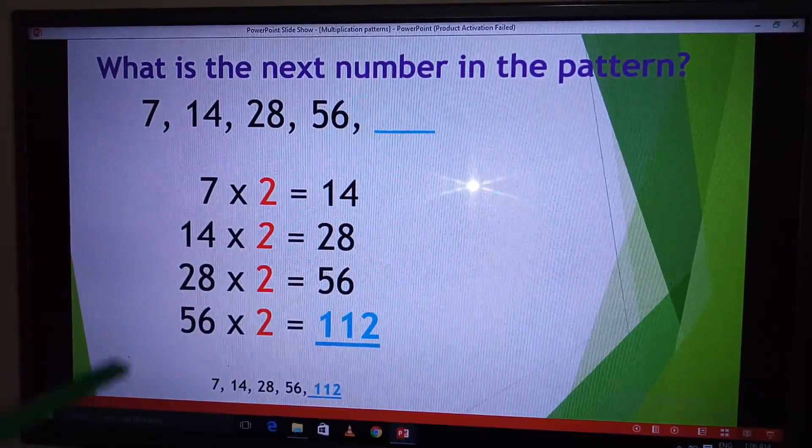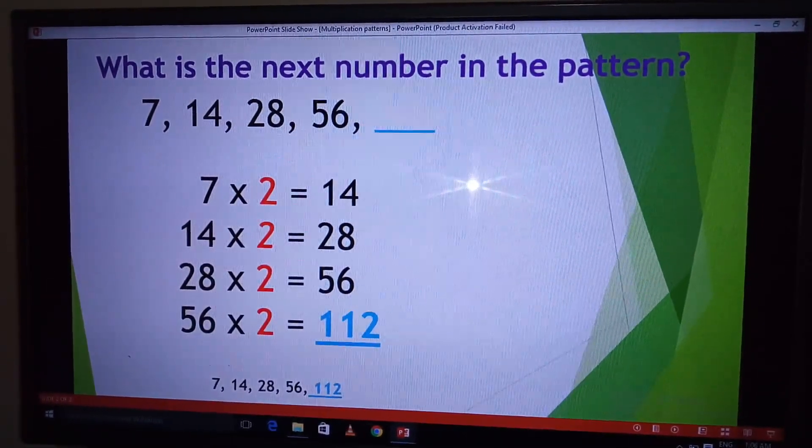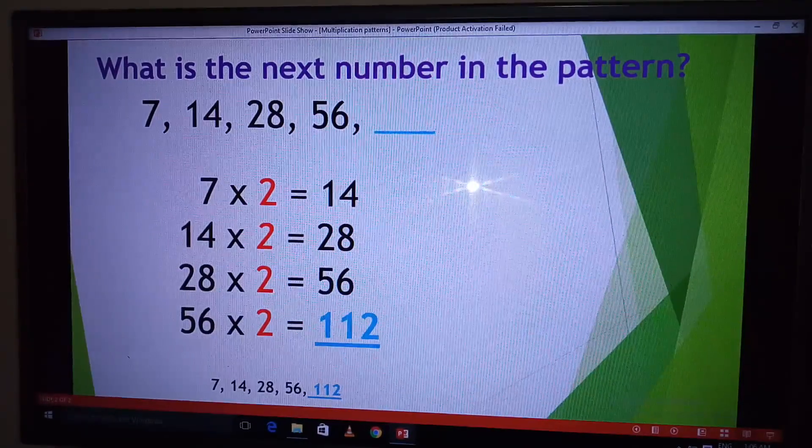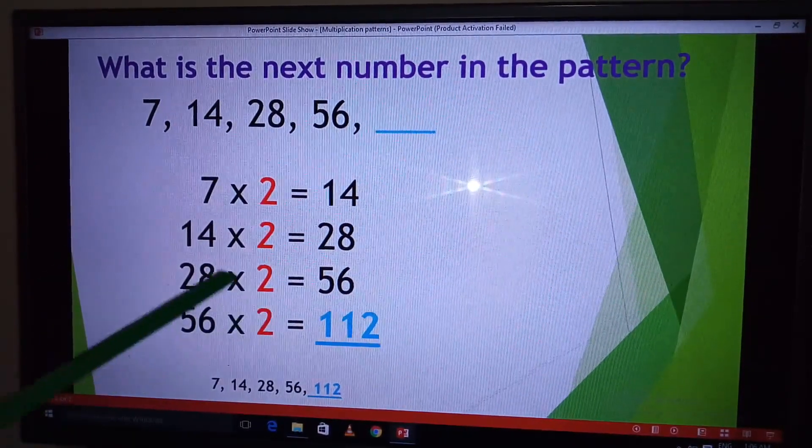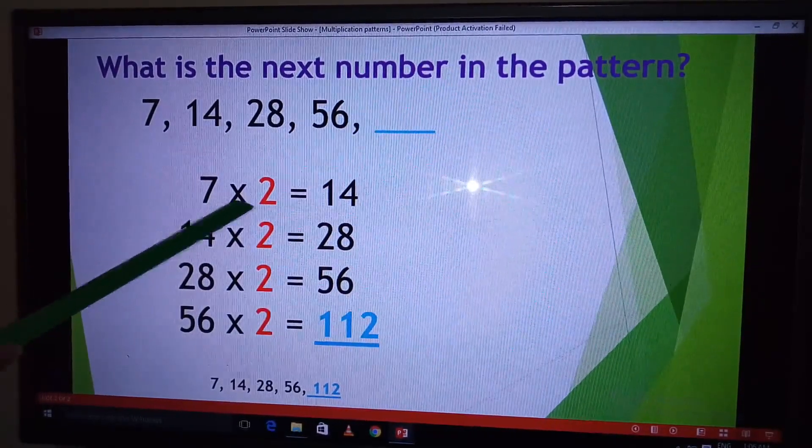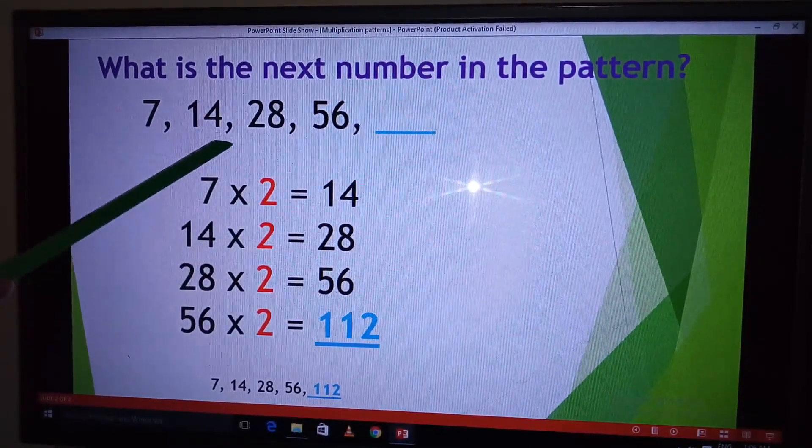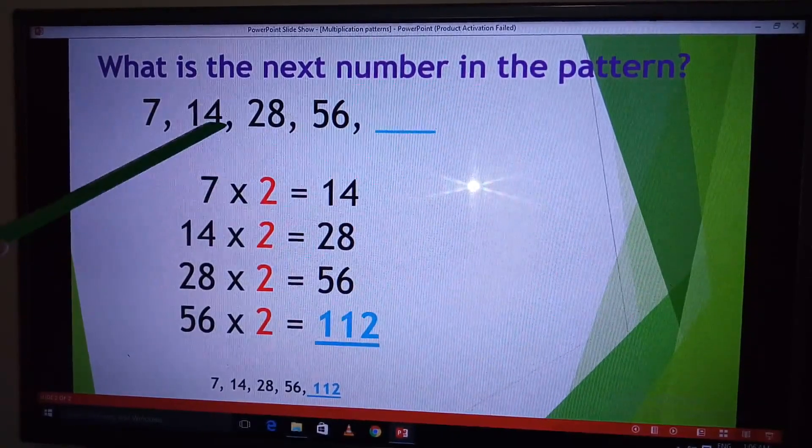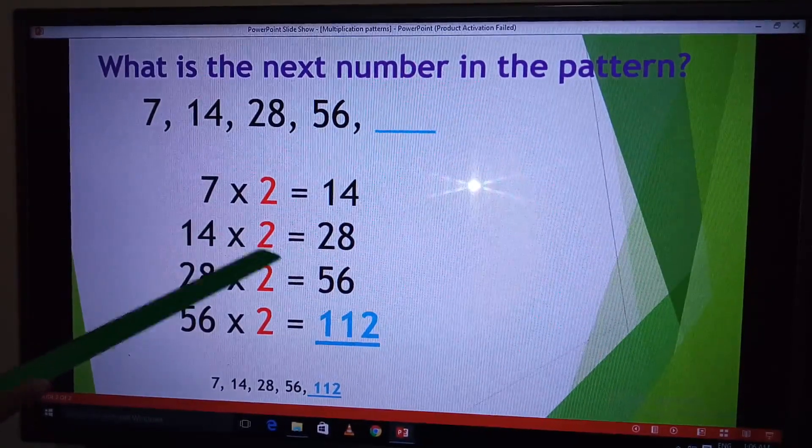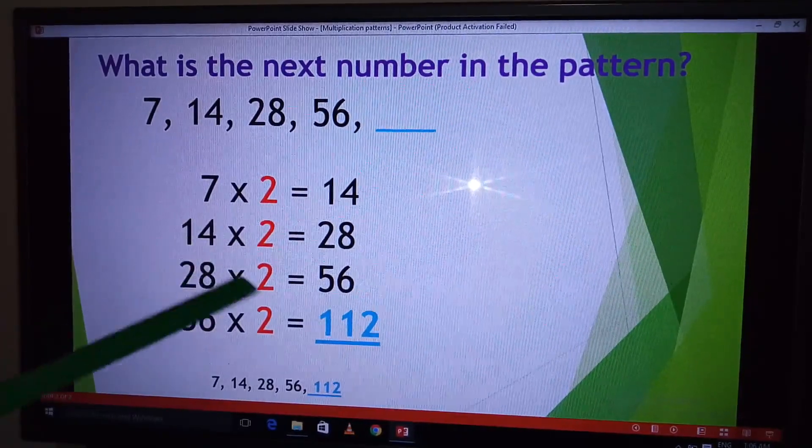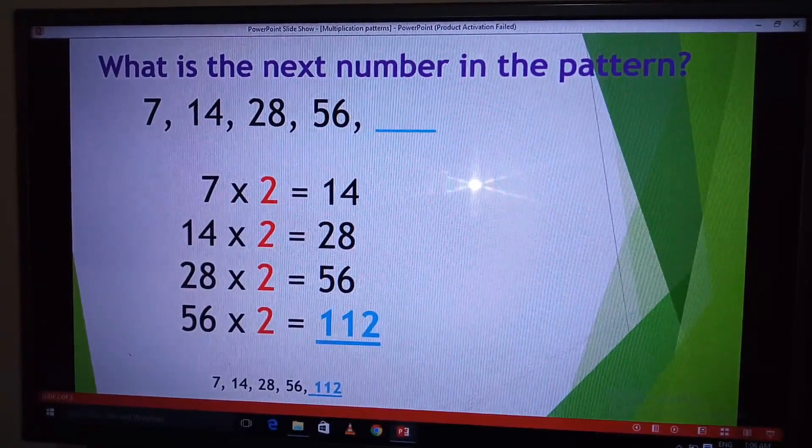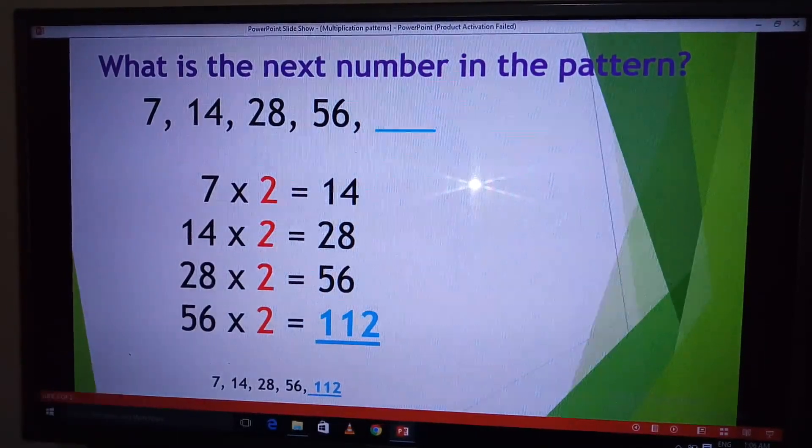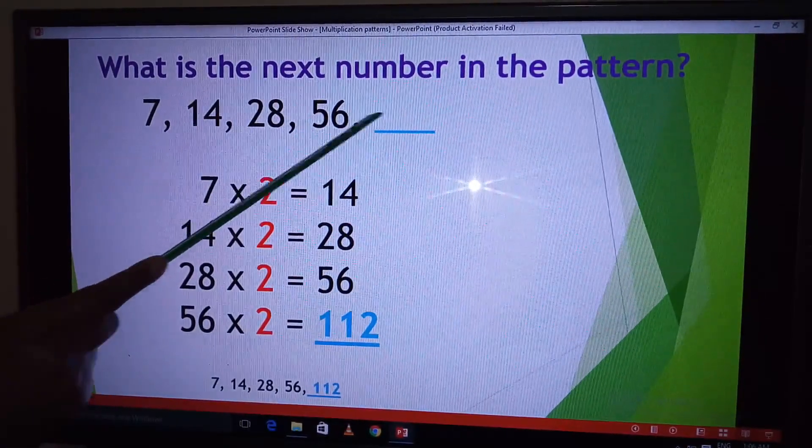So when you look at the sum there, we are able to identify the rule that has been followed. So it seems that for us to get the next number, we multiplied the previous number by 2. For us to get 14, we multiplied 7 times 2. For us to get 28, we multiplied the previous number, which is 14 times 2. So for our case here, 56, it means that for us to get the next number here, we are going to multiply 56 times 2.